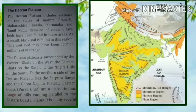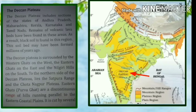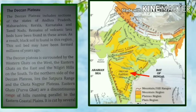The Chotanagpur Plateau includes the states of Jharkhand, Chhattisgarh, and Odisha, and this region is very rich in minerals. Next we will learn regarding the Deccan Plateau. The Deccan Plateau includes sections of the states of Andhra Pradesh, Maharashtra, Kerala, Karnataka, Telangana, and Tamil Nadu.